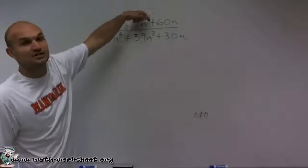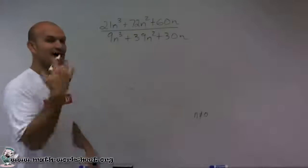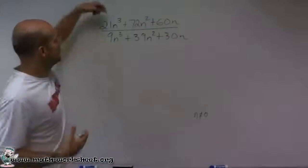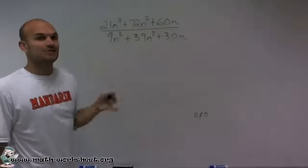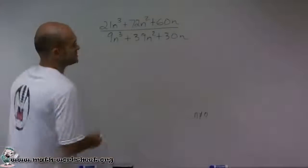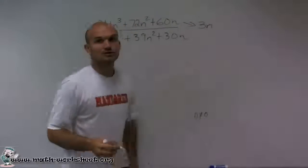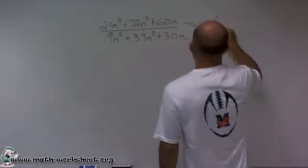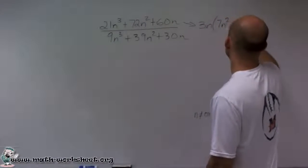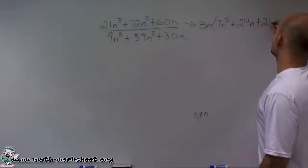Here is n cubed. Here's n squared. And here's an n. So the most amount of n's that they all share is just one n. So I can factor out an n. And then I think about what is the largest number that they all share? Well, 21, 72, and 60, the largest number that divides into all of them that they all share is the number 3. So what I'm going to do is I'm going to factor out a 3n. I'm just going to do the numerator over here. So when I factor out a 3n, I'm left with 7n squared plus 24n plus 20.